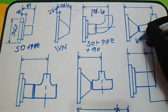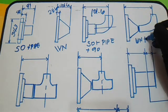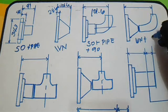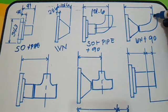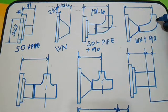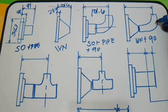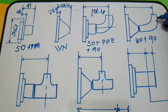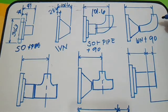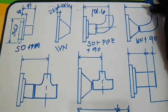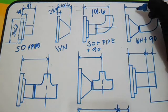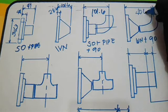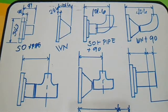This is WN plus 90 degree elbow - weld neck flange plus 90 degree elbow. From the center of 90 degree elbow, our dimension here is 406.